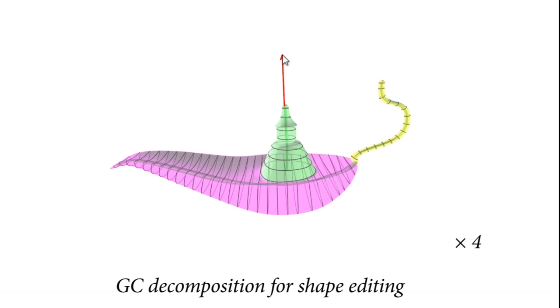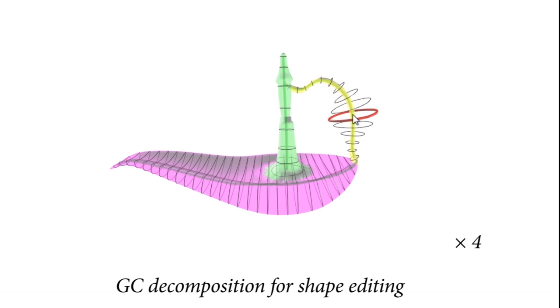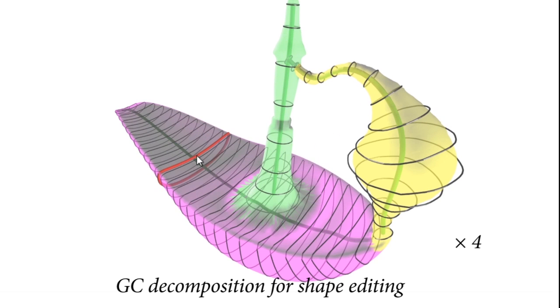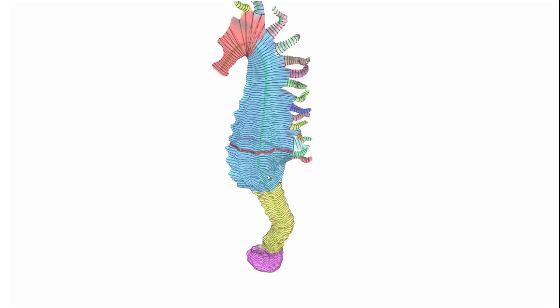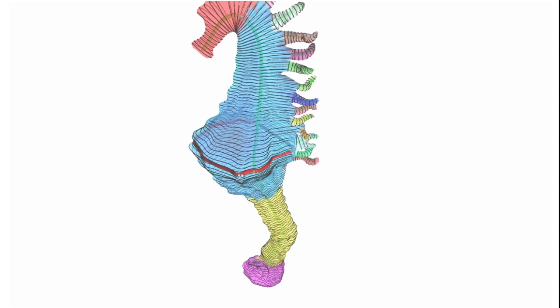The generalized cylinder decomposition also allows us to model the shape by manipulating the individual cylinders through 2D curve editing. We can easily delete parts, deform skeletal axes, and make fine edits on profile curves.